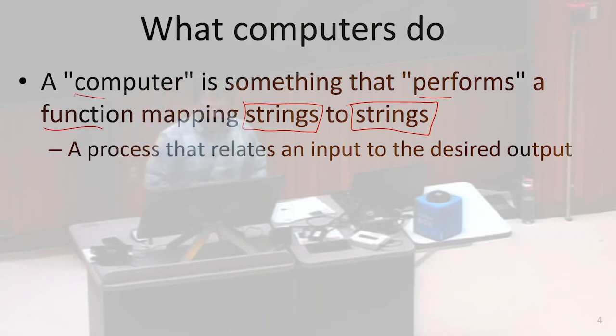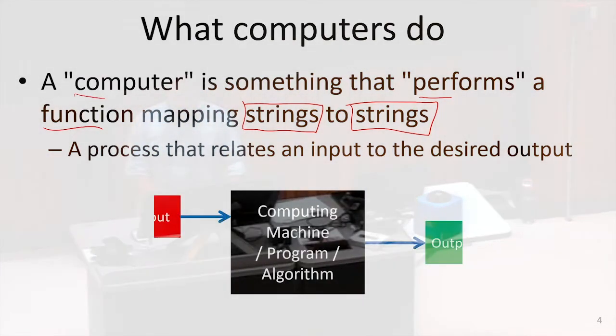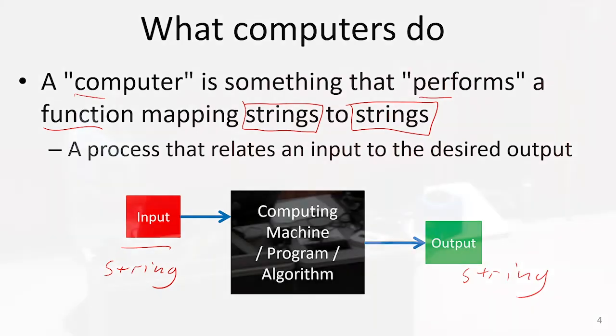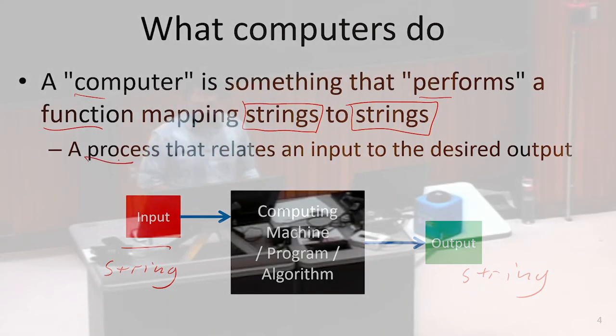So we're going to say our function maps strings to strings. We're going to have our input. This input is going to be a string. And we're going to have output. That output is also going to be a string. This thing in the middle, that is kind of going to be our computer.